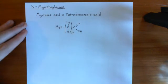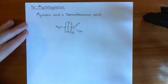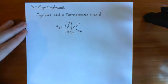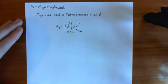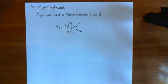Myristic acid molecules can be added onto amino termini of proteins. This time it actually is going to be added onto the first amino acid in the protein, but we'll continue this discussion in the next video.